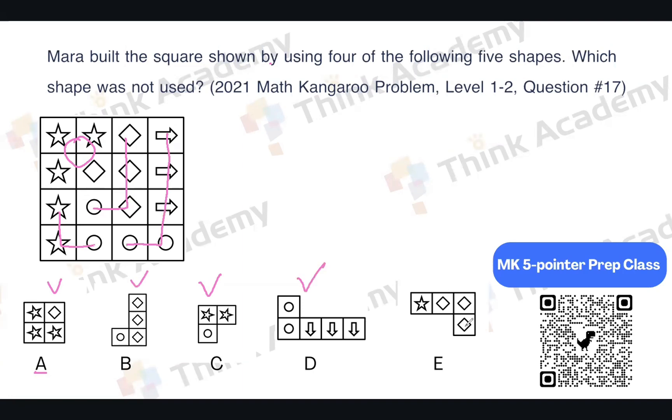How about E? Three diamonds and a star. Oh, someone said, hey, Judy, you can see, we do have three diamonds as an L shape and a star. But is it the shape we used? Everyone, think about it.